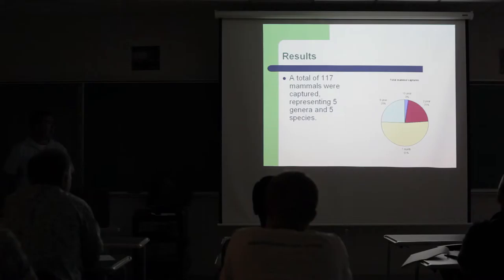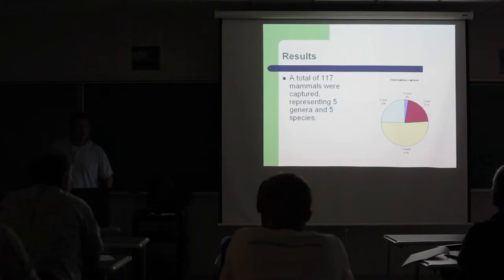We had a total of 117 mammals captured, representing five genera and five species. In the unburned control, there were only three individuals captured, which is only 3 percent of the total captures, and it was one species, Peromyscus.